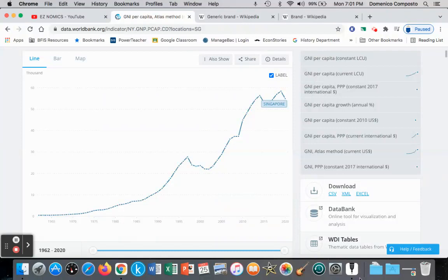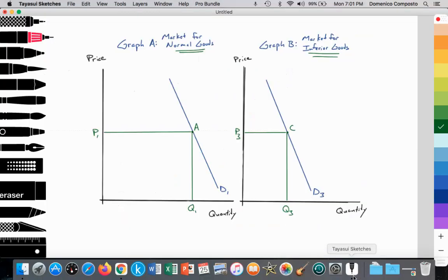What is the impact on the demand for normal and inferior goods? So we have this additional variable of income, and we're going to assume that income is falling. And the symbol for income is Y. So we're going to assume that income is falling for the household.